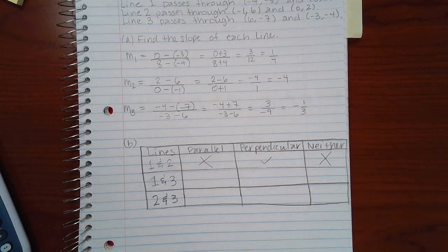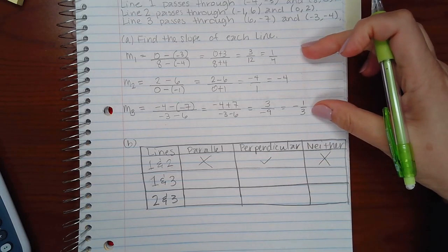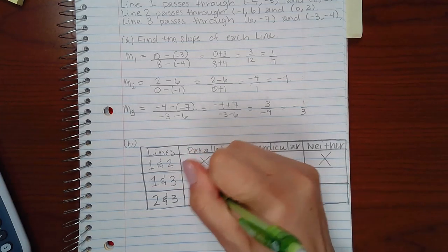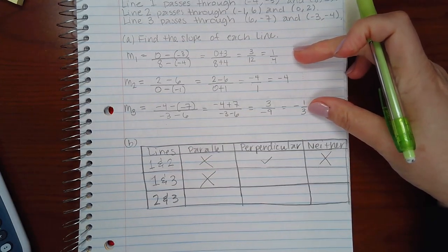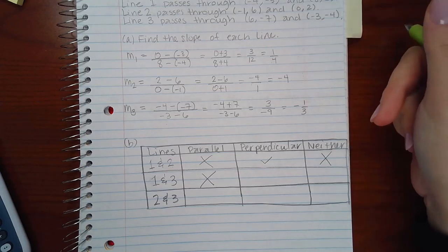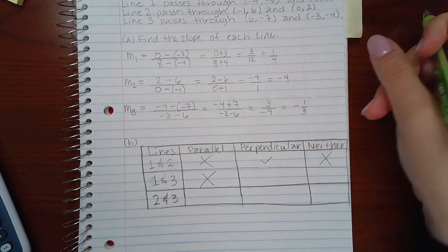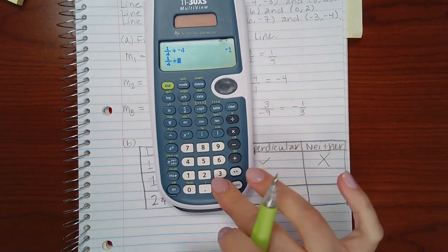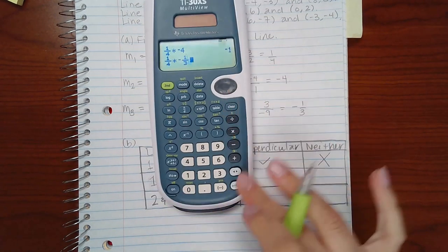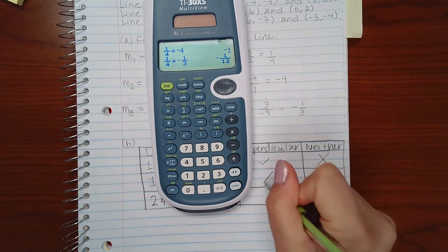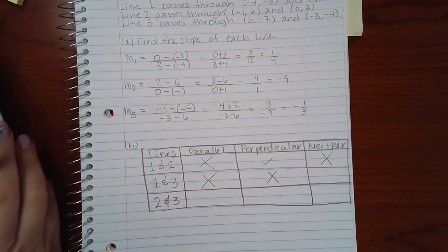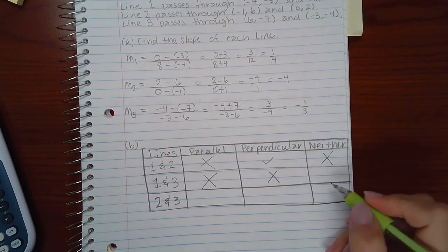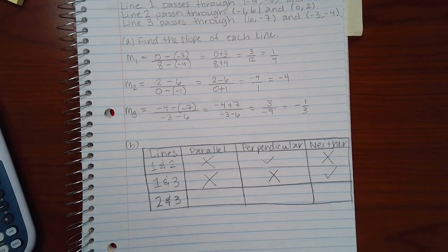Now we're going to compare one and three. They are obviously not the same, so they are not parallel. And if I do the reciprocal of one, I don't get the other. Also, if I use the second technique, if I multiply those two numbers together, I do not get negative one. Therefore, they are not perpendicular. If they're not parallel and not perpendicular, then we select neither.